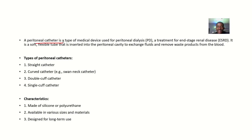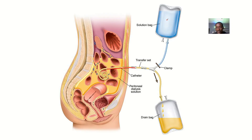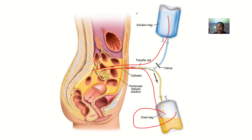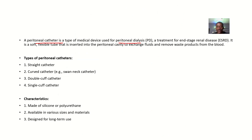A peritoneal catheter is a type of medical device that is used for peritoneal dialysis. You can see there's a solution bag going in and waste coming out through a drain bag. It's used for peritoneal dialysis — the treatment of end-stage renal disease. It is a soft, flexible tube that is inserted into the peritoneal cavity to exchange fluid and remove waste from the blood, basically lifting the load that is usually on the kidney to filter waste.